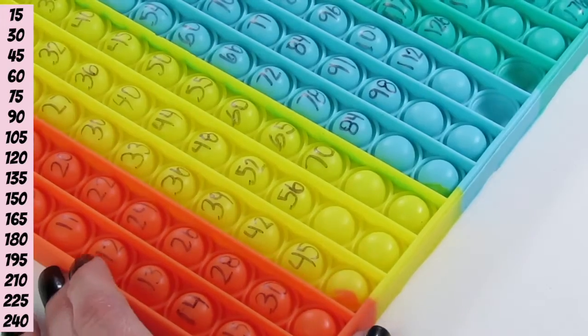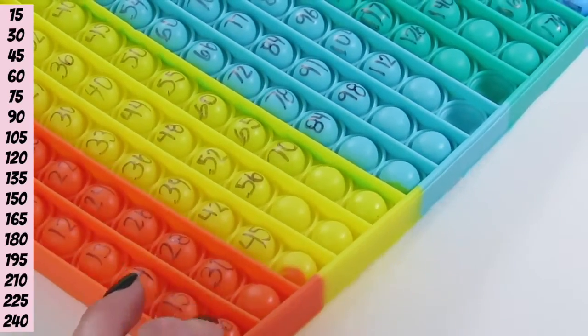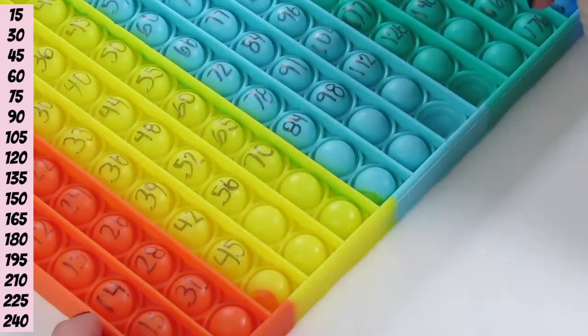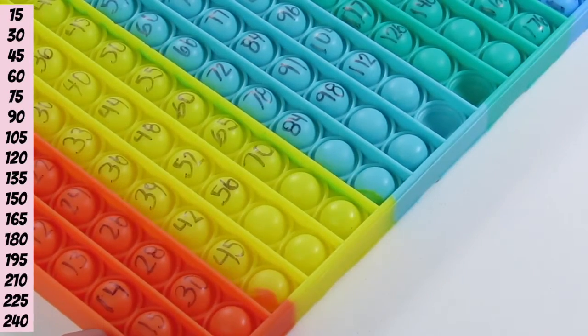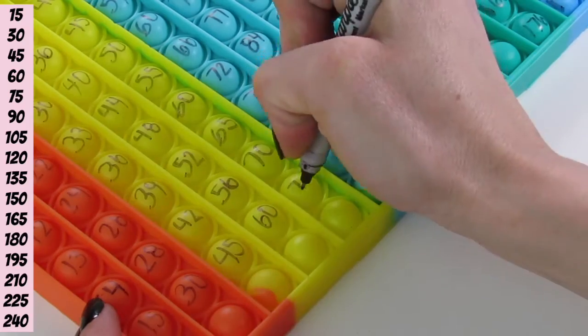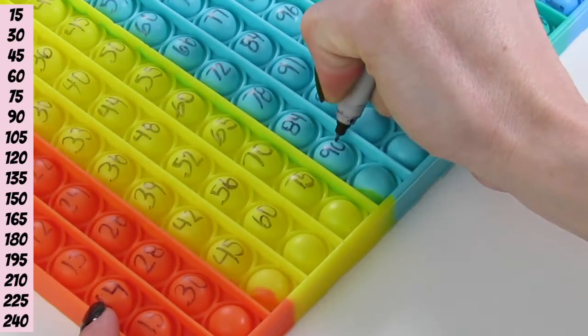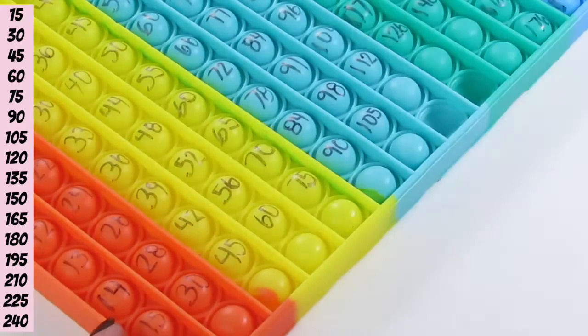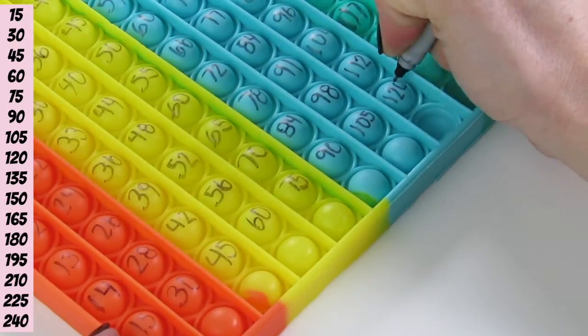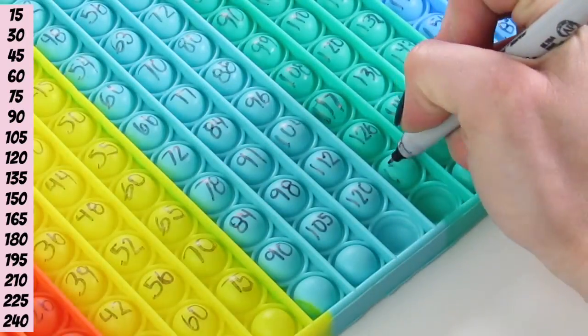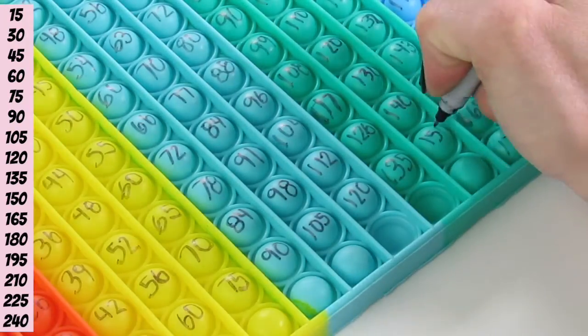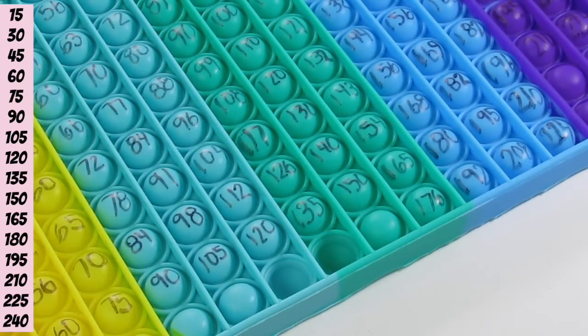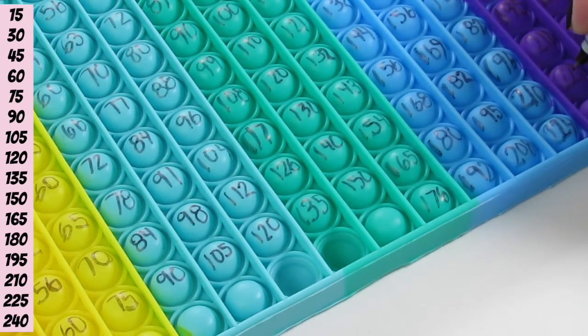So, here you can see the multiples on the side of 15. You'll probably recognize the first ones up to 90 because of the clock. So, you have 15, 30. 15 is your quarter hour. 30 is your half hour. 45, 60, which is your whole hour. 75, 90, and then 105, 120, 135, and goes on from there.